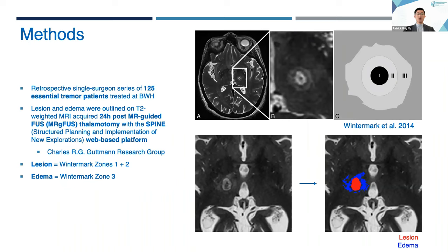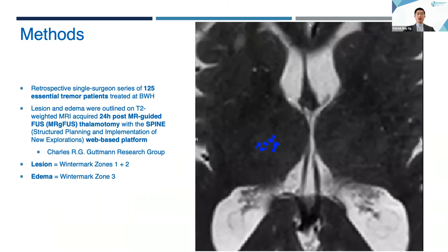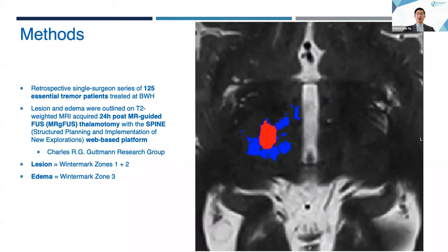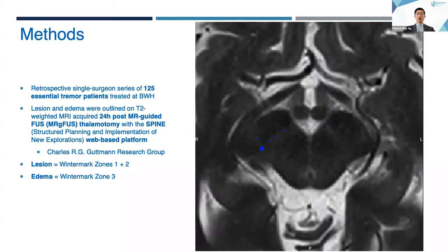In short, on T2-weighted imaging, there are commonly three zones created by FUS sonications. For our purposes, lesion was defined as Wintermark zones 1 and 2, and edema was defined as Wintermark zone 3. Here's an example of a full segmentation for our patient — lesion in red, edema in blue.